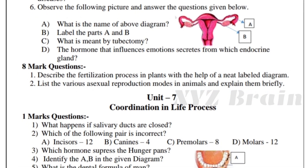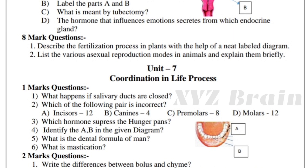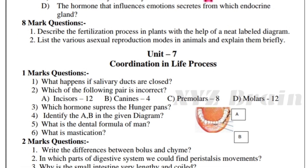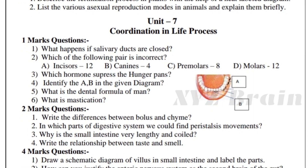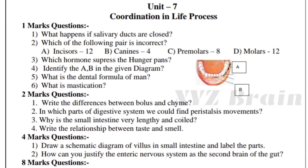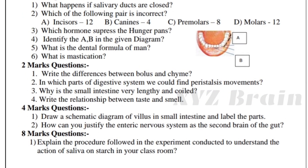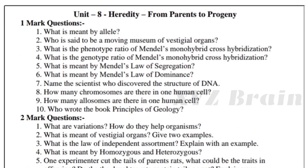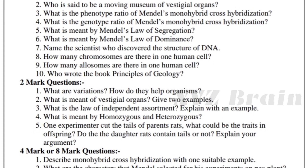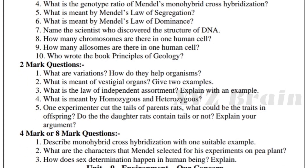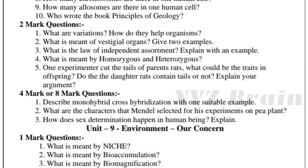In the 7th unit, we have 8 marks and 4 marks, one mark and two marks. Topics include monohybrid, dihybrid, law of independent assortment, homozygous, heterozygous, alleles, and test crosses. Also secondary sexual characters and sexual determination.